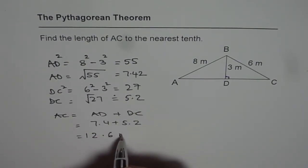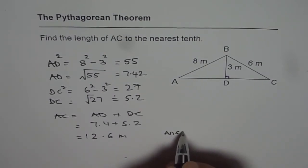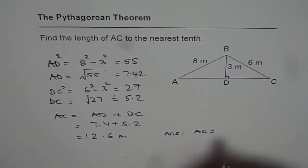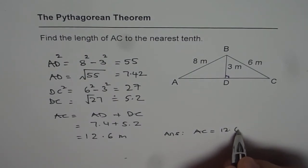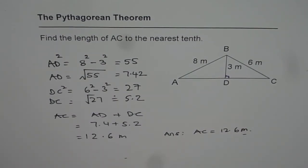And therefore, our answer is AC equals 12.6 meters. So have a good look at this question. When we are given a situation like this, you may have to solve the triangle twice. Find the lengths, combine them as we did, and get your answer. Thank you and all the best.